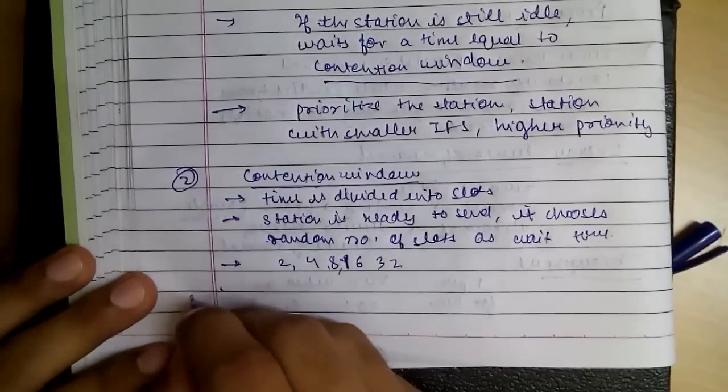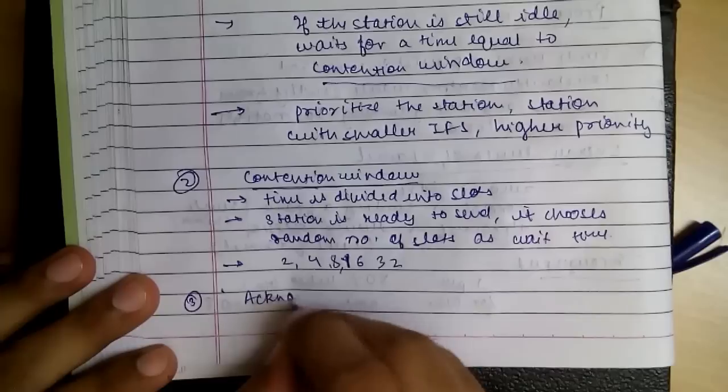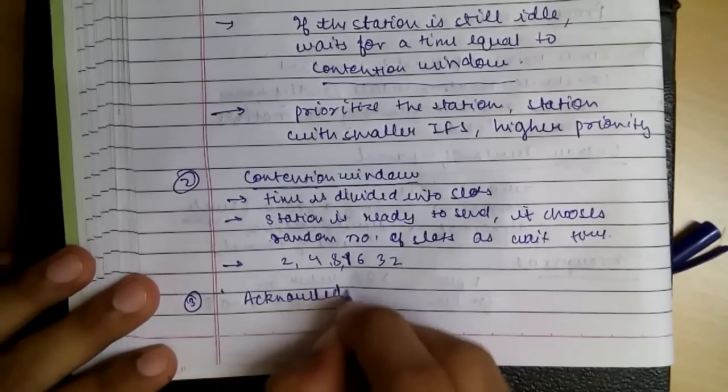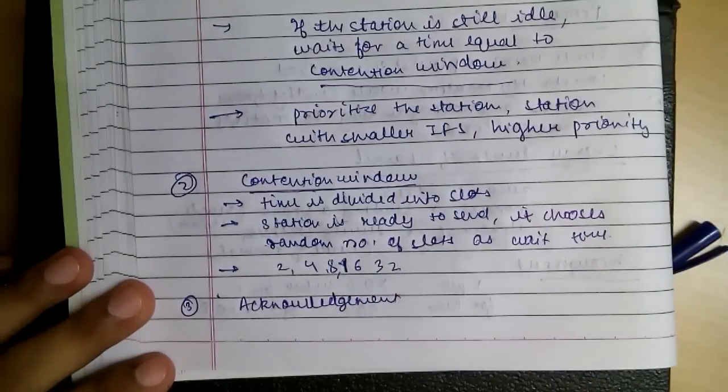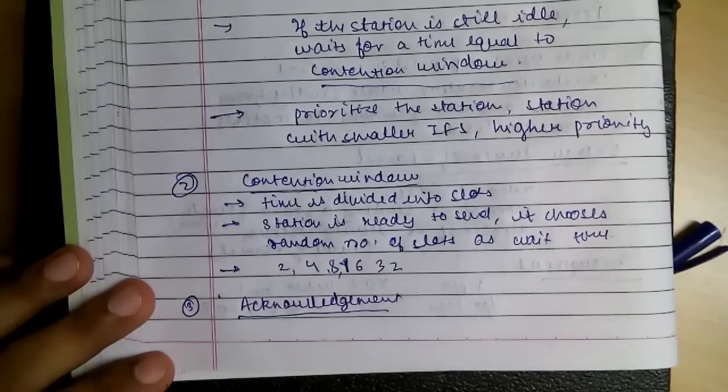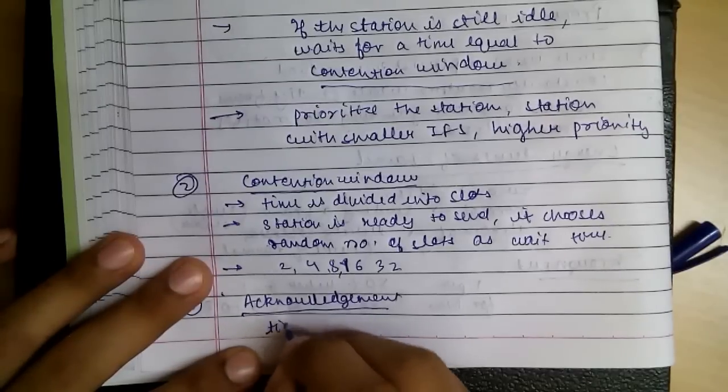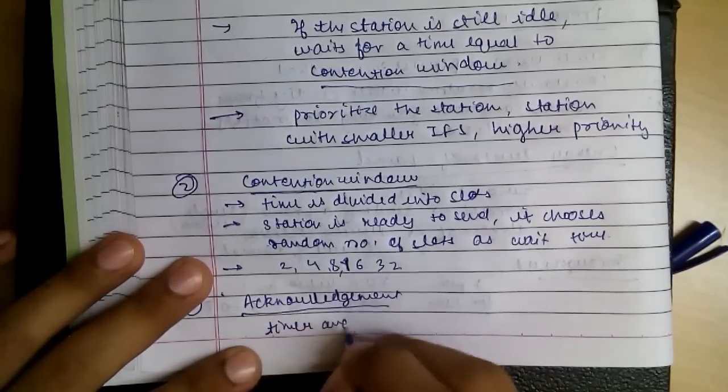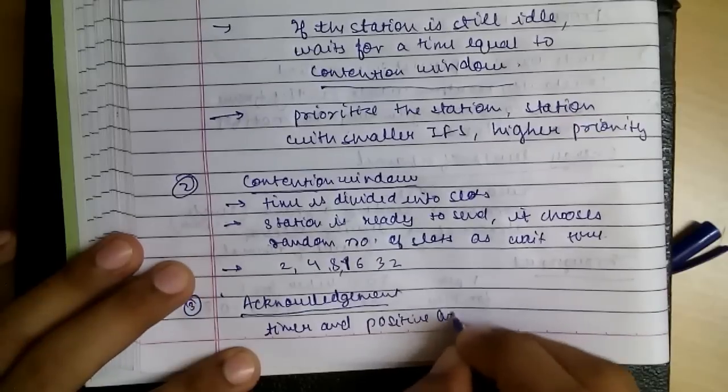And the third one is obviously acknowledgement. After all this, we still require acknowledgement as collision can still occur. We can't prevent it totally. So timer and positive acknowledgement is required.